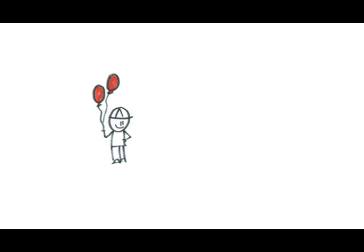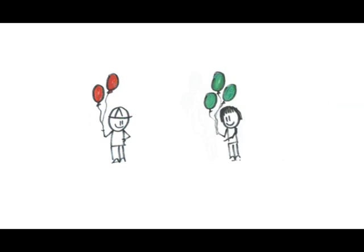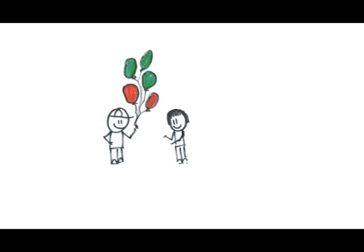Let's start with a story. This is Jimmy. Jimmy has two balloons. This is Sally. Sally gives Jimmy three balloons. Now Jimmy has five balloons.